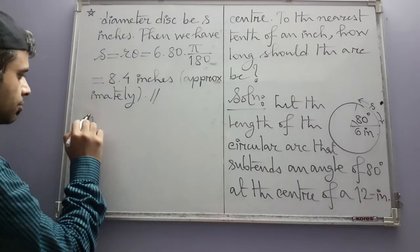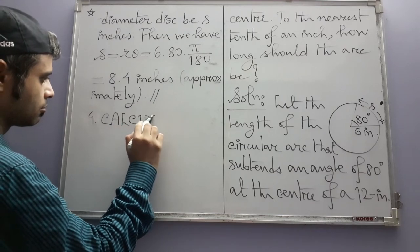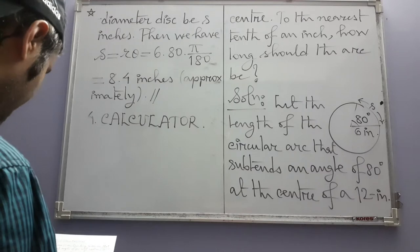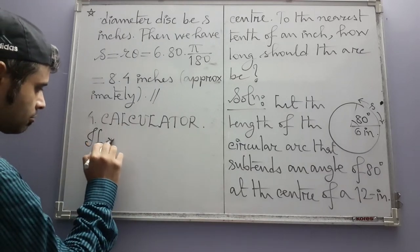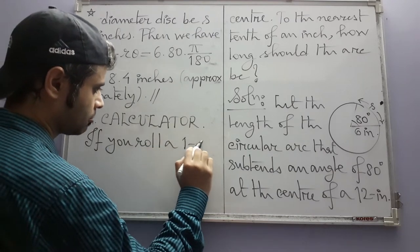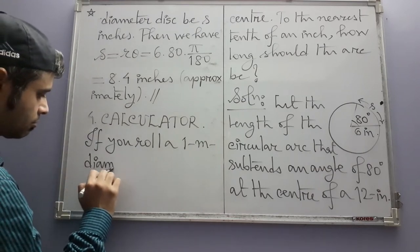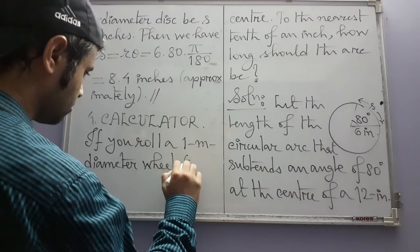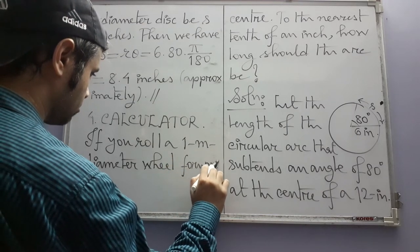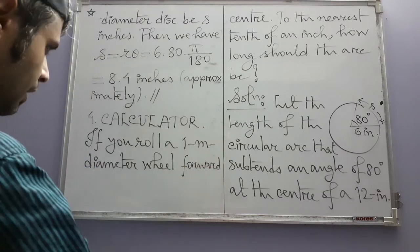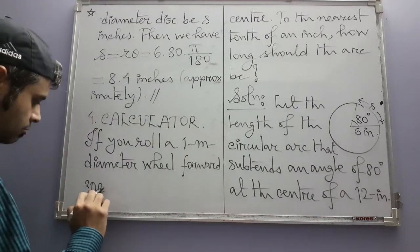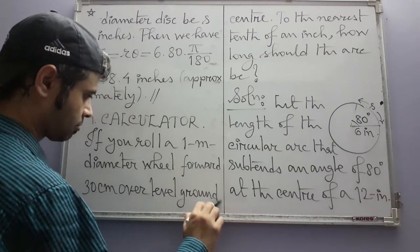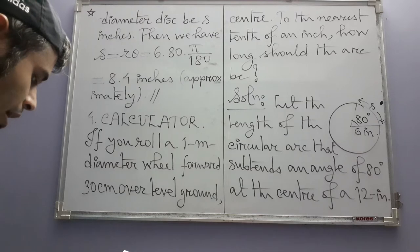Note that 8.4 inches is only an approximation — the exact value is irrational due to the presence of π, while 8.4 is rational, so they can never be exactly equal. We can write this as approximately 8.4 inches. The fourth exercise is also a calculator exercise: if you roll a 1-meter diameter wheel forward 30 centimeters over level ground, through what angle will the wheel turn?